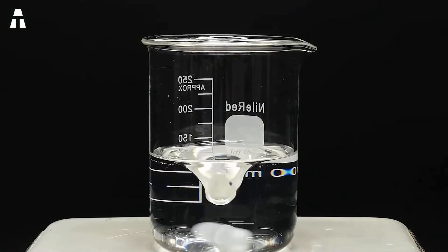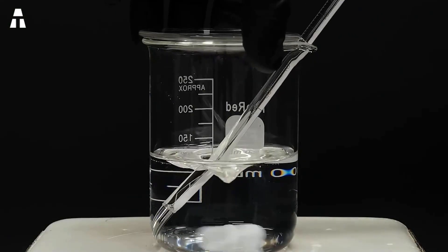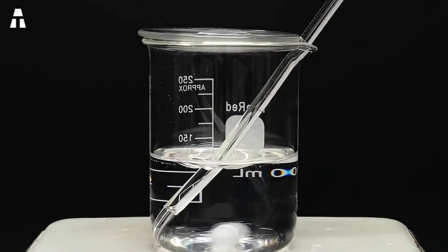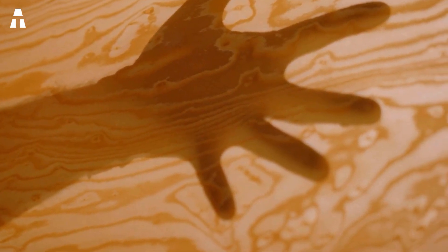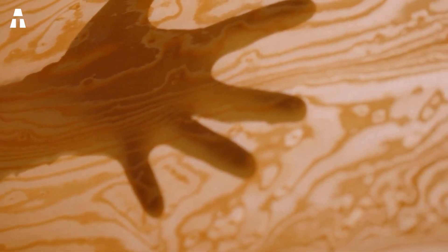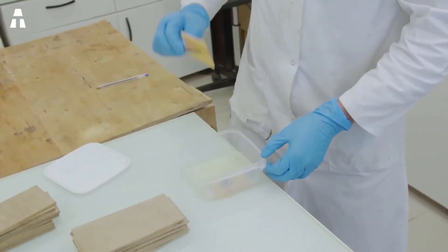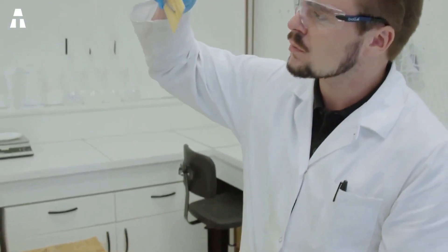Nevertheless, this process to eliminate lignin is a time-consuming one, producing a lot of liquid waste and resulting in a moderately resistant wood. However, researchers at the University of Maryland have found a way to make the wood transparent without having to remove the lignin.